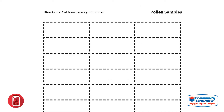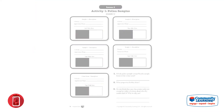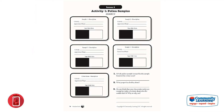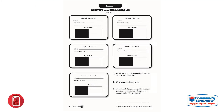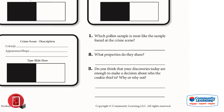The students will need to have cut their transparency sheet into slides. They will cover the sample with one slide and tape it in place around all four sides. Then they will examine the pollen carefully using a hand lens, comparing the suspect samples to the one from the crime scene. Once all pollen samples have been analyzed, they will use the questions found on the pollen sample sheet to guide their investigation.